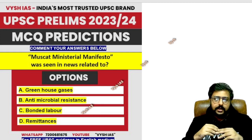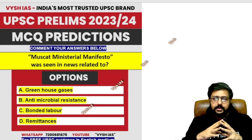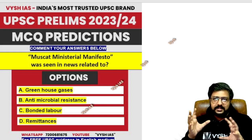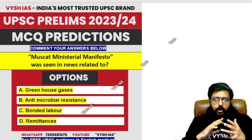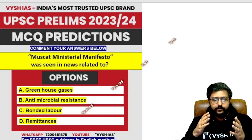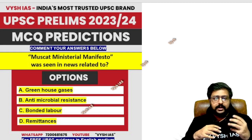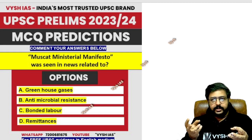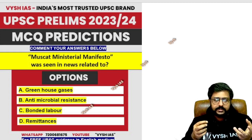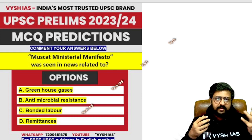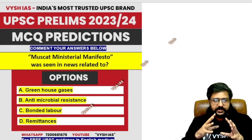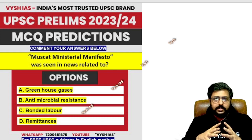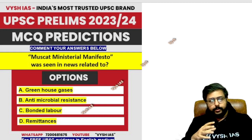Next topic: Muscat Ministerial Manifesto (MMM) — seen in news related to what? Options: greenhouse gases, antimicrobial resistance, bonded labor, or remittances. All four options are important as per UPSC syllabus. The answer is antimicrobial resistance. The World Antimicrobial Awareness Week happens in November every year. Recently they had this manifesto at the third global high-level ministerial conference on this topic. The theme was 'AMR pandemic — from policy to One Health action.'